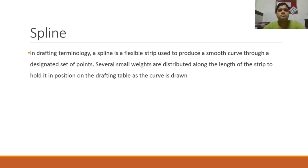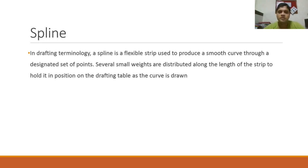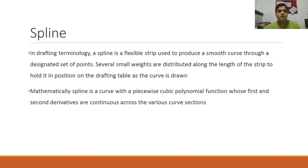An ancient way of creating curves was a steel wire or rope held between two points. Whenever you want to create a curvature, some weights used to be attached in between, and because of the weights the wire would be pulled towards them, giving different shapes of curves. That was the ancient way of creating curves, and when we want to model this mathematically we require some equations.